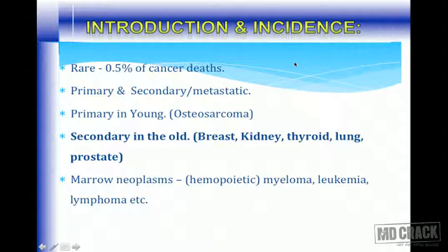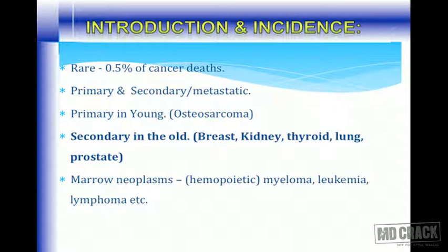Bone tumors constitute around 0.5 percent of cancer deaths. Compared to soft tissue tumors, bone tumors are rare. They could be primary or secondary — metastatic tumor deposits. For example, breast carcinoma goes to the axillary lymph nodes initially but later can go to bones, causing osteolytic metastasis. Prostate carcinoma is known for osteoblastic metastatic deposits. Primary bone tumors are very common in the young, like osteosarcoma in those under 20 years of age.